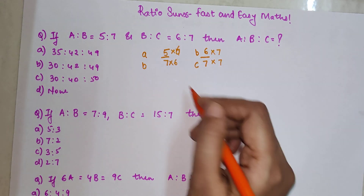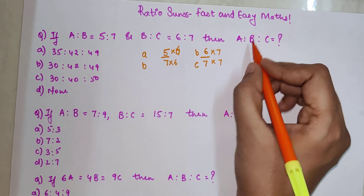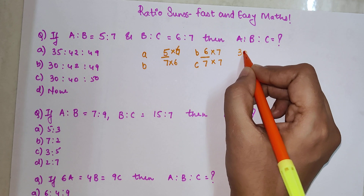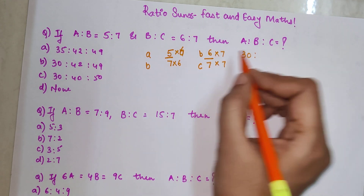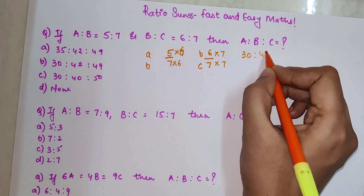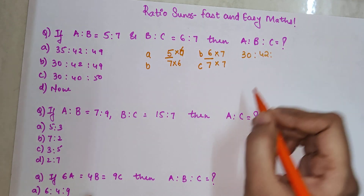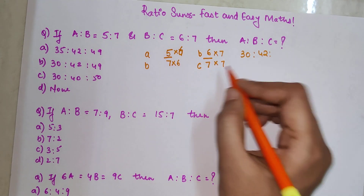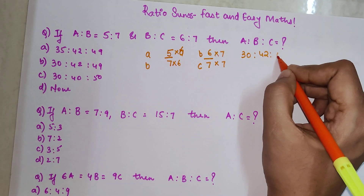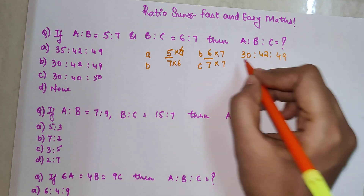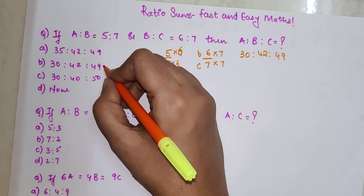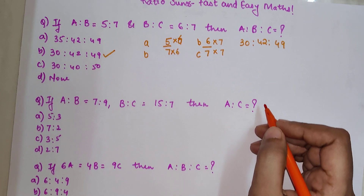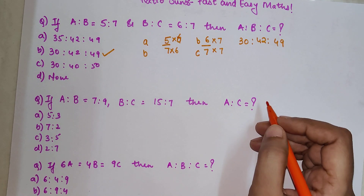When you multiply 5 into 6 you get 30, and 7 into 6 is 42. This is 42, so we write it once because both are representing B, and then C comes which is 7 into 7 = 49. So the answer is 30:42:49, and option B is the correct option.